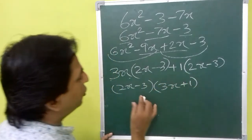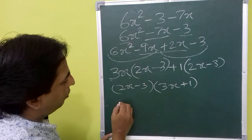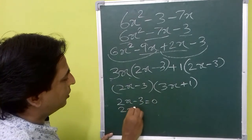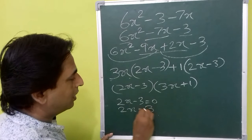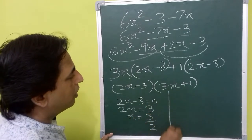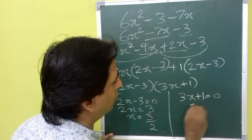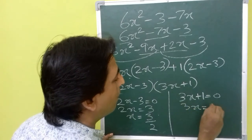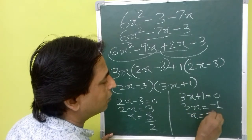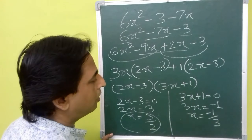So the factored form is 2x minus 3 times 3x plus 1. We equate each factor to zero to get the zeros. From 2x minus 3 equals 0 we get 2x equals 3, so x equals 3 by 2. From 3x plus 1 equals 0 we get 3x equals minus 1, so x equals minus 1 by 3. We have found two zeros of the polynomial.